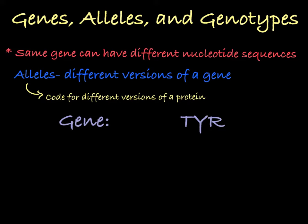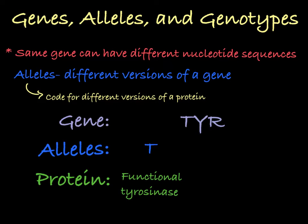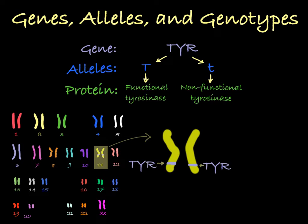For the sake of this video, we will focus on the allele — let's call it big T — that codes for the fully functional protein that successfully helps make melanin, and the allele — little t — that codes for the version of the protein that is non-functional and unable to help produce melanin. The gene TYR is located on chromosome 11, and a person's genome has two copies of chromosome 11, which means they have two copies of the TYR gene. These two copies can be the same allele, coding for the same version of tyrosinase, or they can be different, each coding for different versions of tyrosinase.